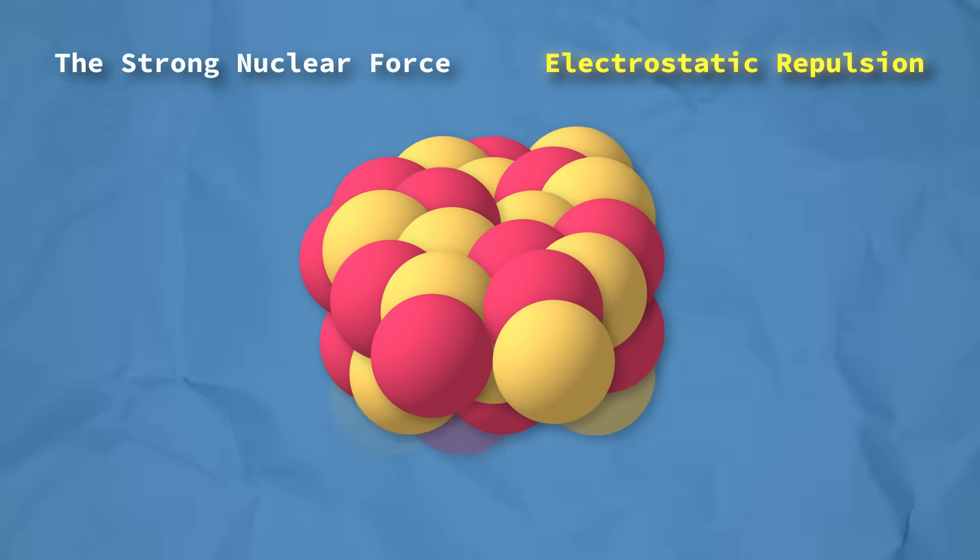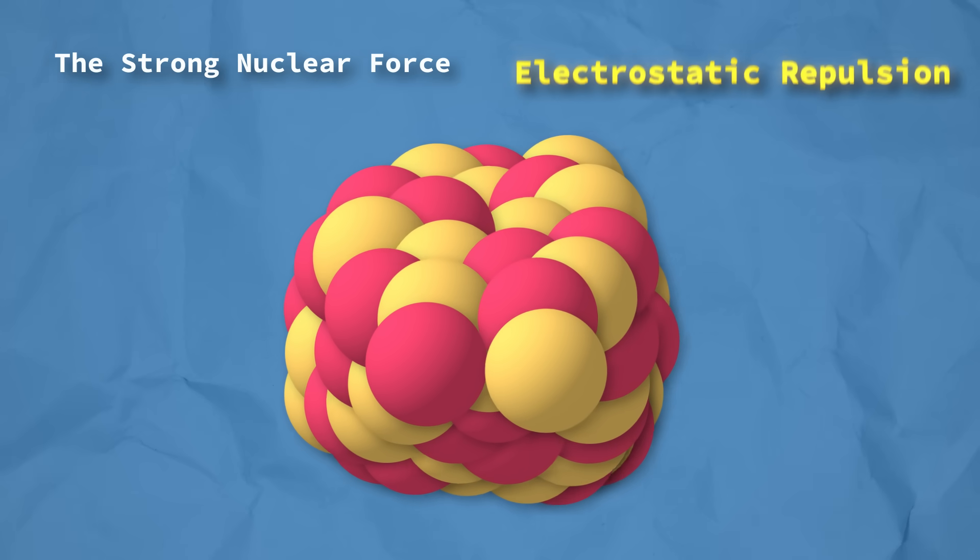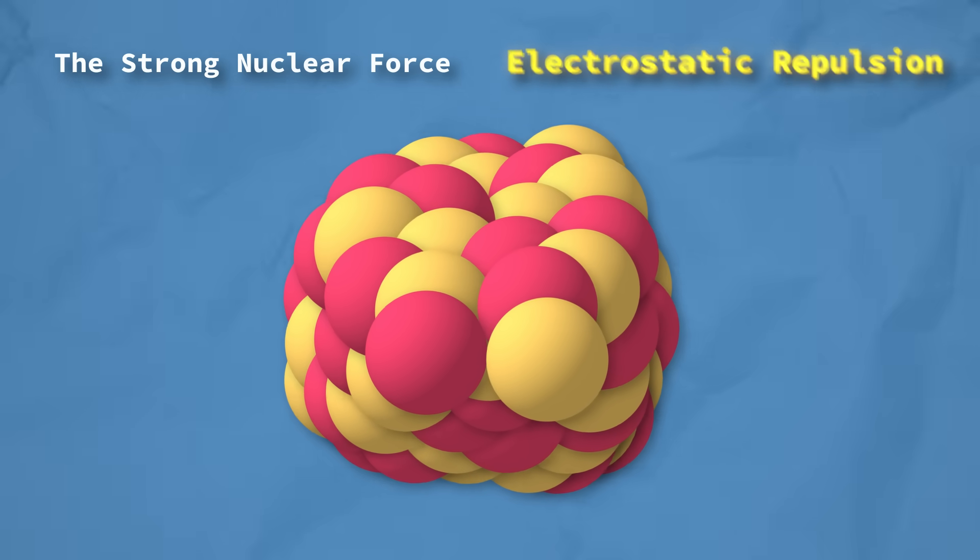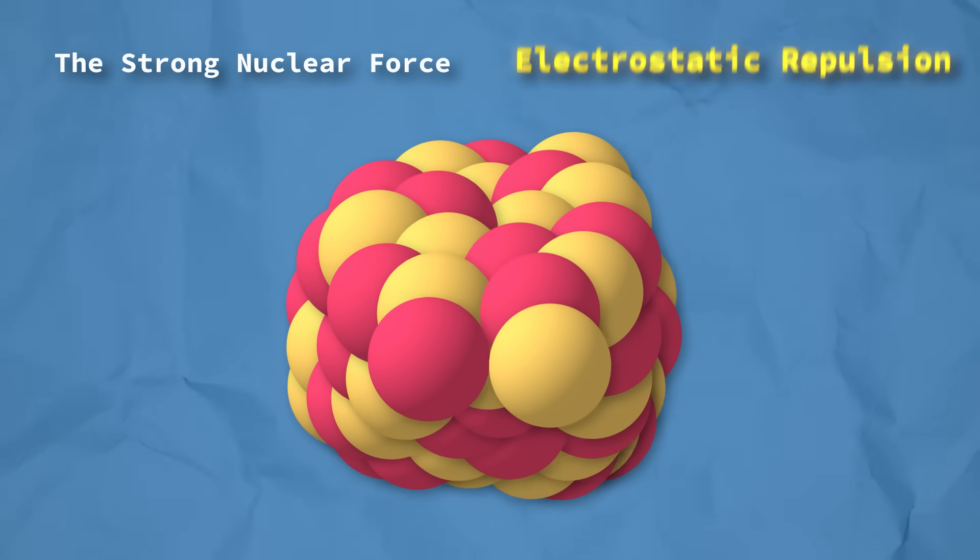So as elements get heavier and heavier, the number of protons will increase, and this repulsion becomes larger and larger, eventually outstrengthening the formerly strong, strong nuclear force, and all heavy elements eventually become unstable.